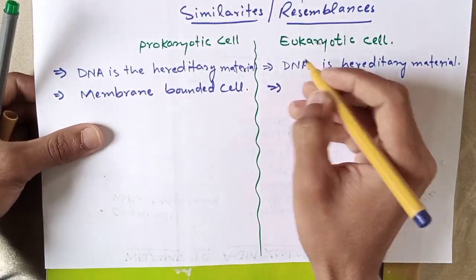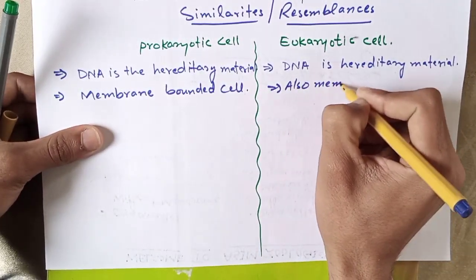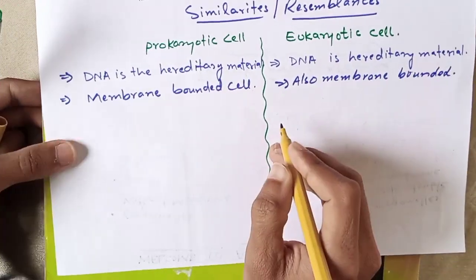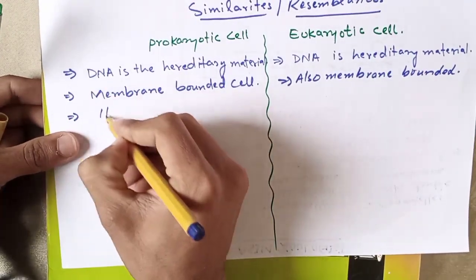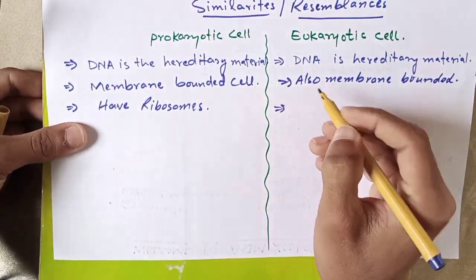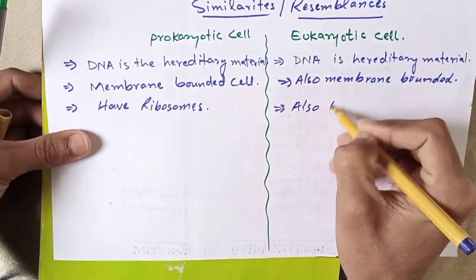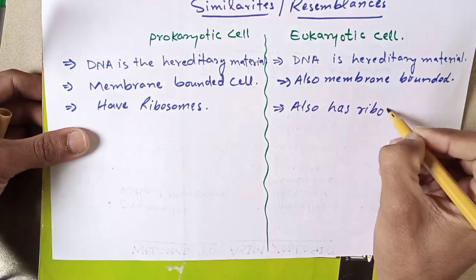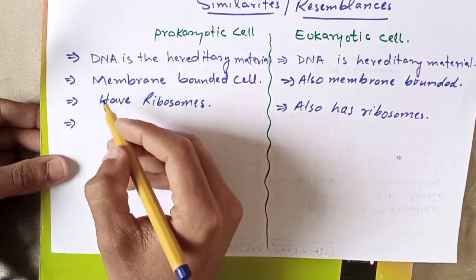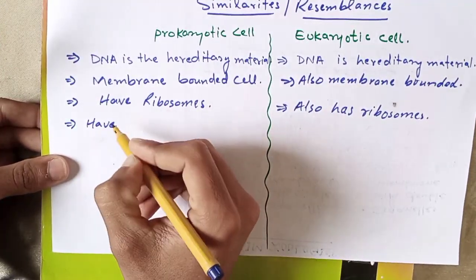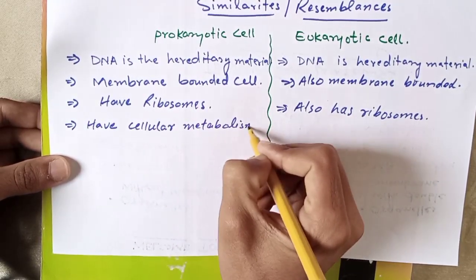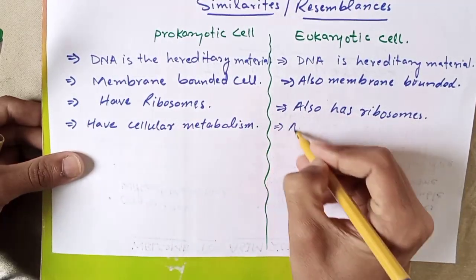The second similarity is that prokaryotic cells are membrane-bound, and eukaryotic cells are also membrane-bound. The third similarity is that prokaryotic cells have ribosomes, and eukaryotic cells also have ribosomes.